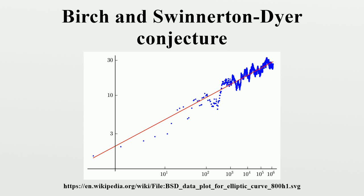Certain analytic methods allow for an estimation of the order of zero in the center of the critical strip of families of L-functions. Admitting the BSD conjecture, these estimations correspond to information about the rank of families of elliptic curves in question. For example, supposing the generalized Riemann hypothesis and the BSD conjecture, the average rank of curves given by a certain family is smaller than 2.